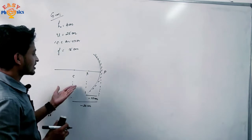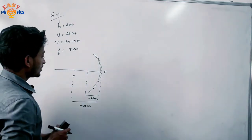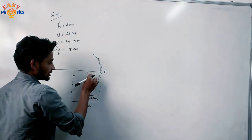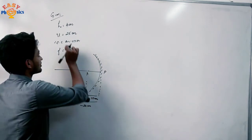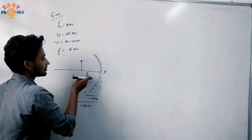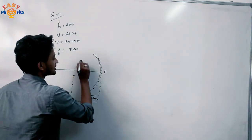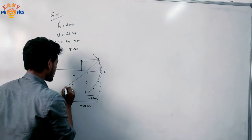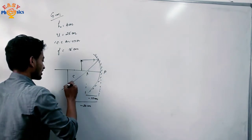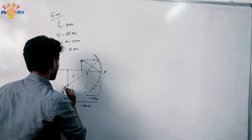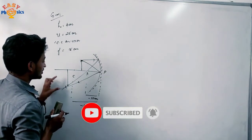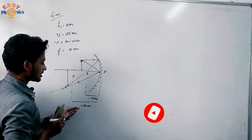Now we have already seen that the radius of curvature is twice the focal length. We have to place the object at 25 cm, and the focal length is 15 cm. So 15 cm cannot reach 25 cm — the object is placed between the focus and the centre of curvature. Now we will go to the ray diagram. I already have two rays for our ray diagram, and I will put a close focus on the right diagram.